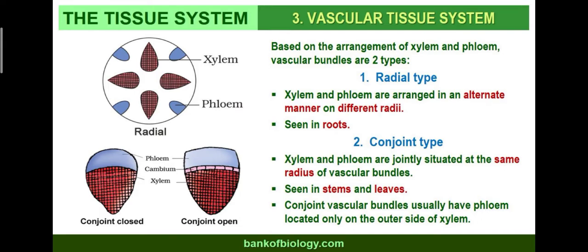Radial-type vascular bundles are seen in roots — both monocot and dicot. In the conjoint type, xylem and phloem are jointly situated at the same radius of the vascular bundle. This type is seen in stems and leaves. In conjoint vascular bundles, phloem is located only on the outer side of xylem.